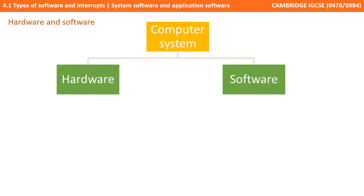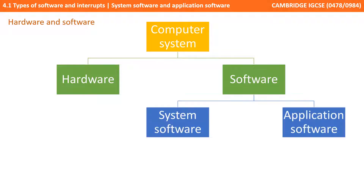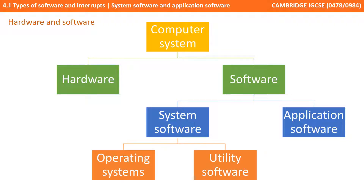A computer system is made up of both hardware and software. Software can be further broken down into system software and application software, and system software can be broken down one more step into operating systems and utility software.